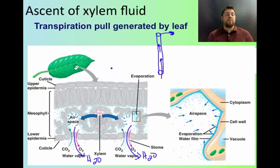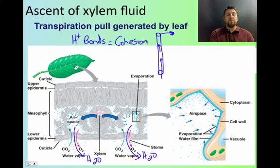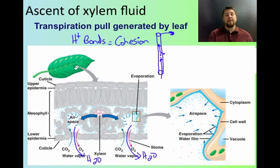Water has hydrogen bonds that link it together through a process called cohesion. Whenever one water molecule moves, the water molecule below it sticks together with it, and they all move up in a big chain because they're all stuck together. That suction at the top pulls that column of water up from the ground up to the leaves where it's needed.